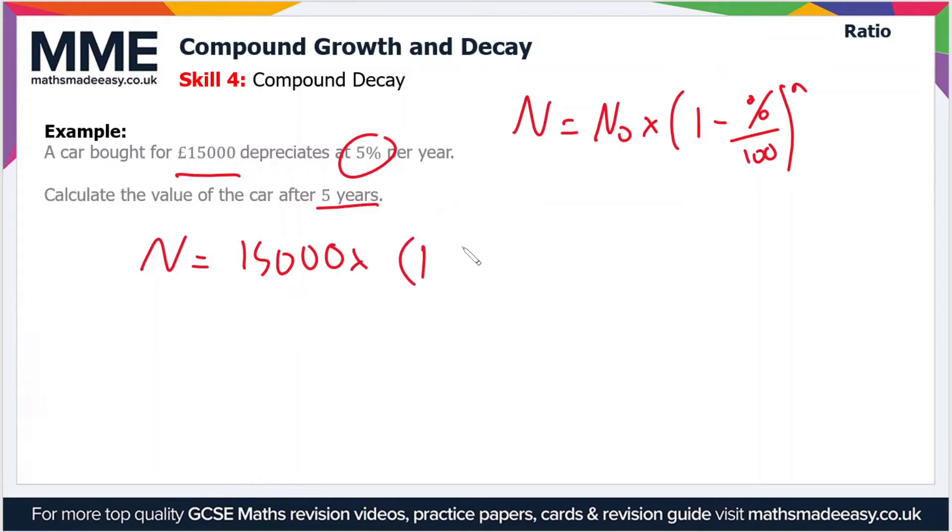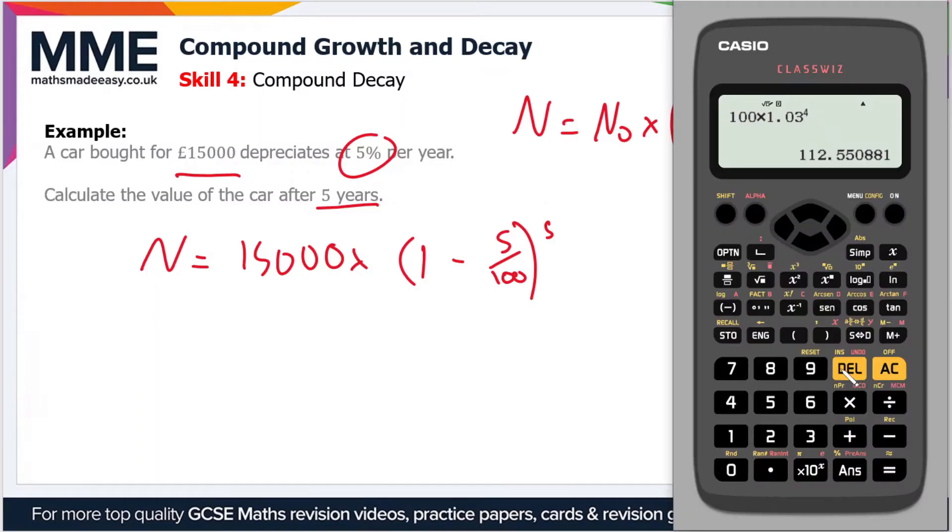...times 1 minus 5 divided by 100, to the power of 5. So let's just put all that into the calculator as it is. So we'll just clear that. So 15,000 times 1 minus 5 divided by 100, close the brackets, all to the power of 5.